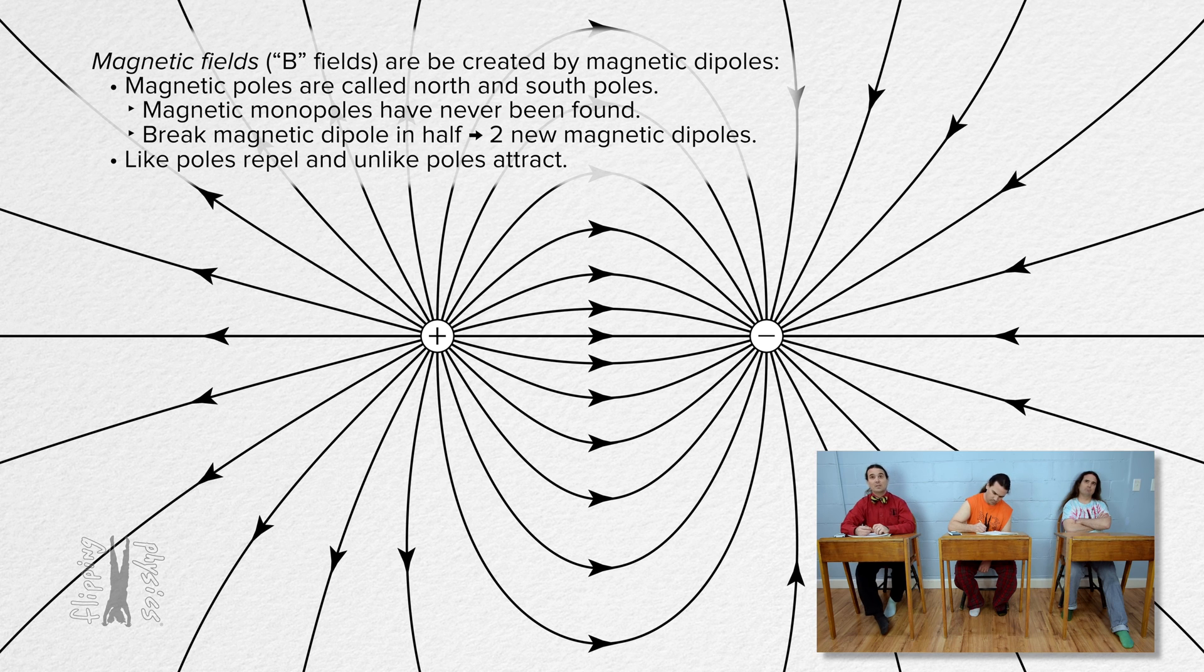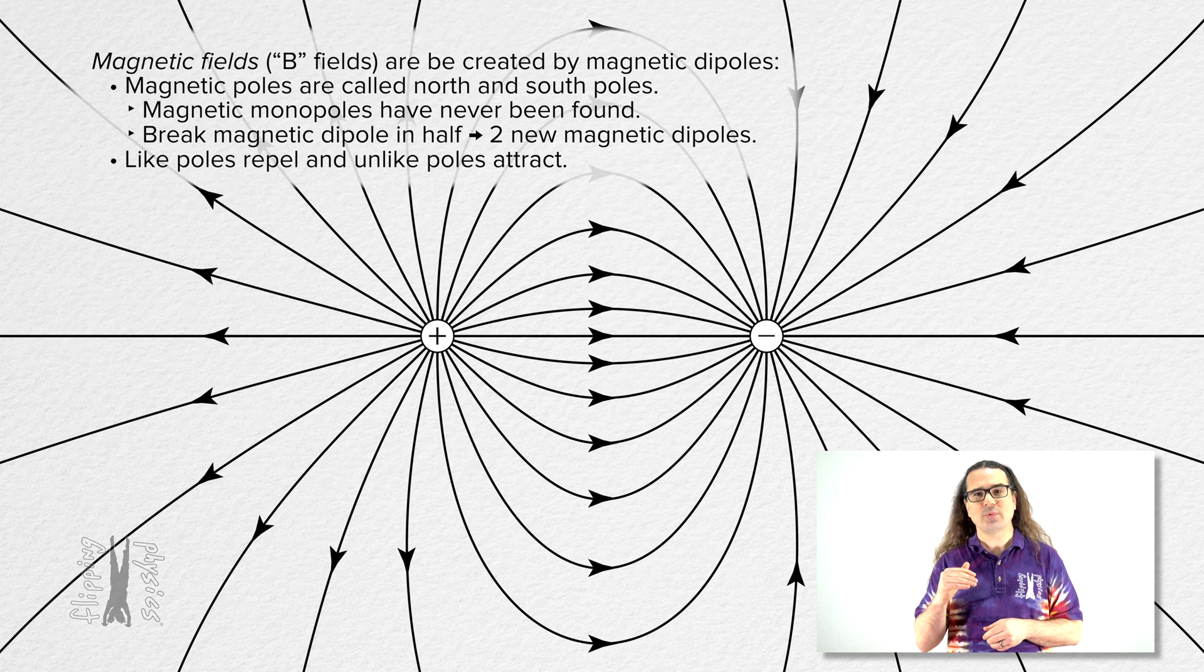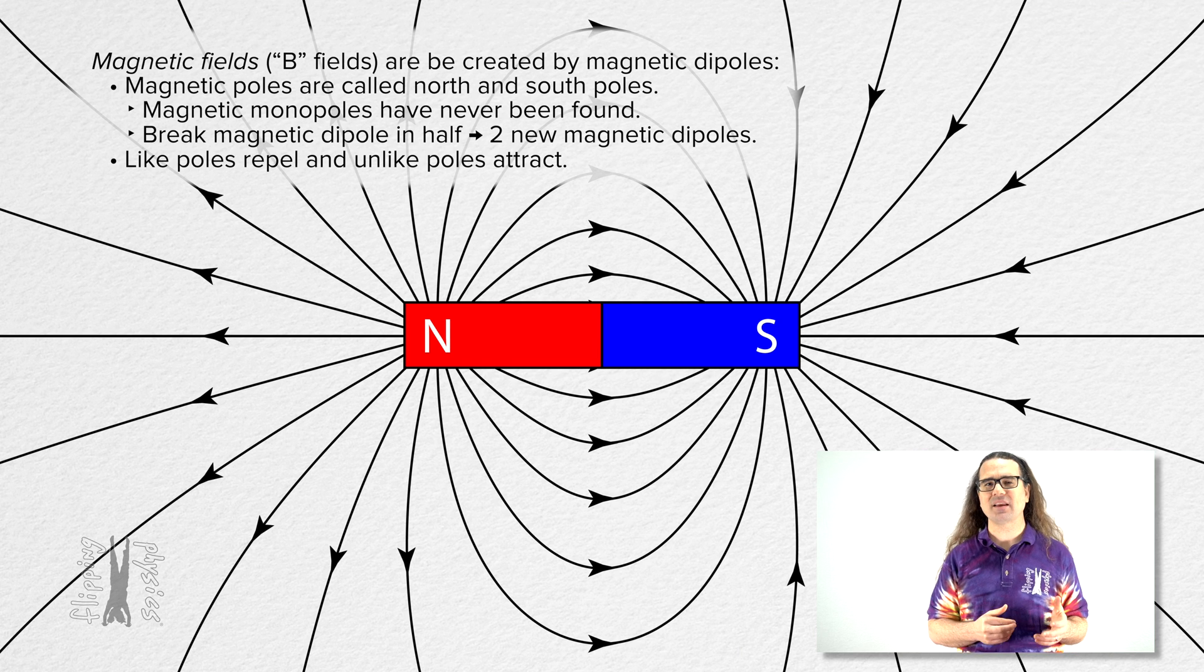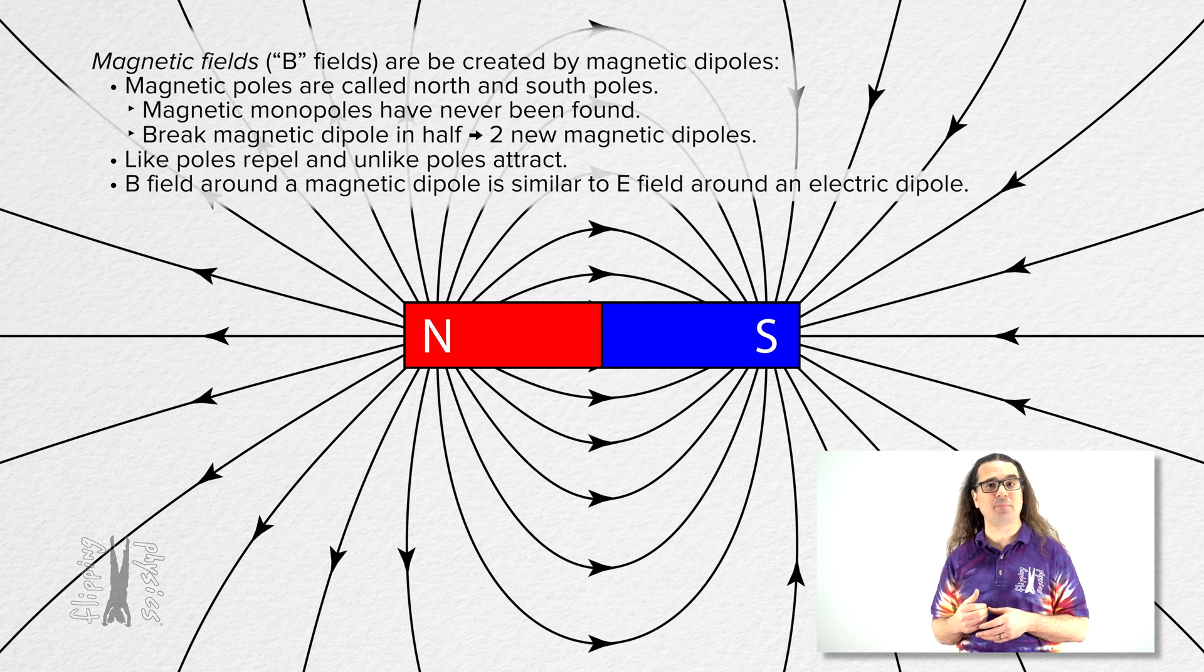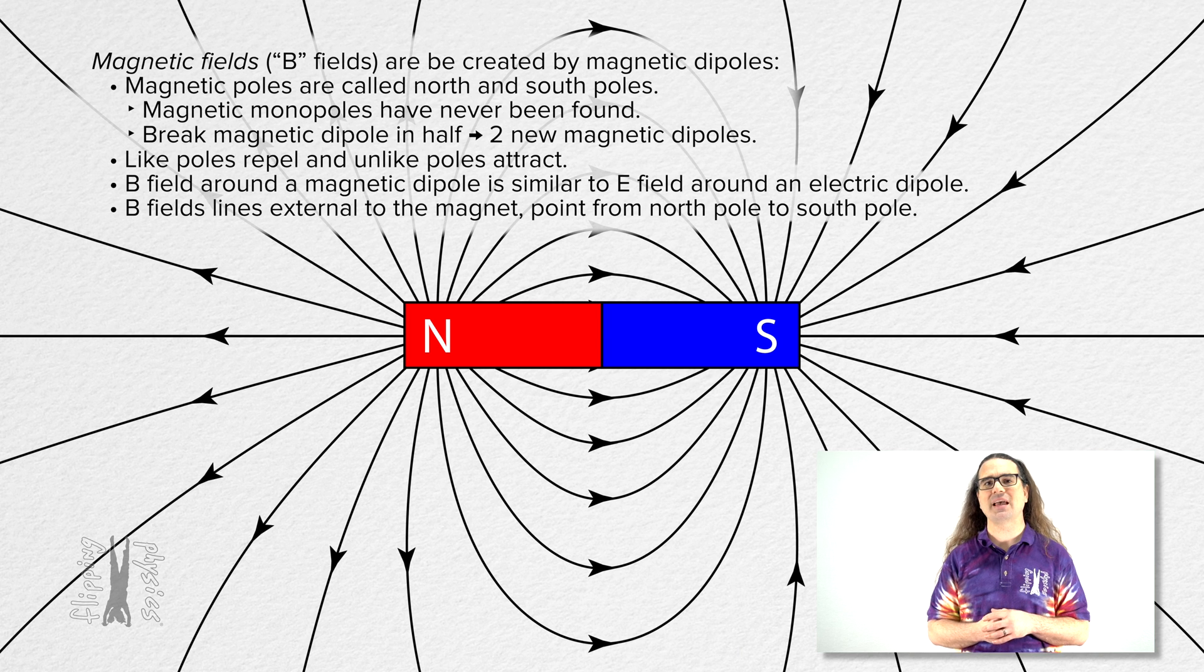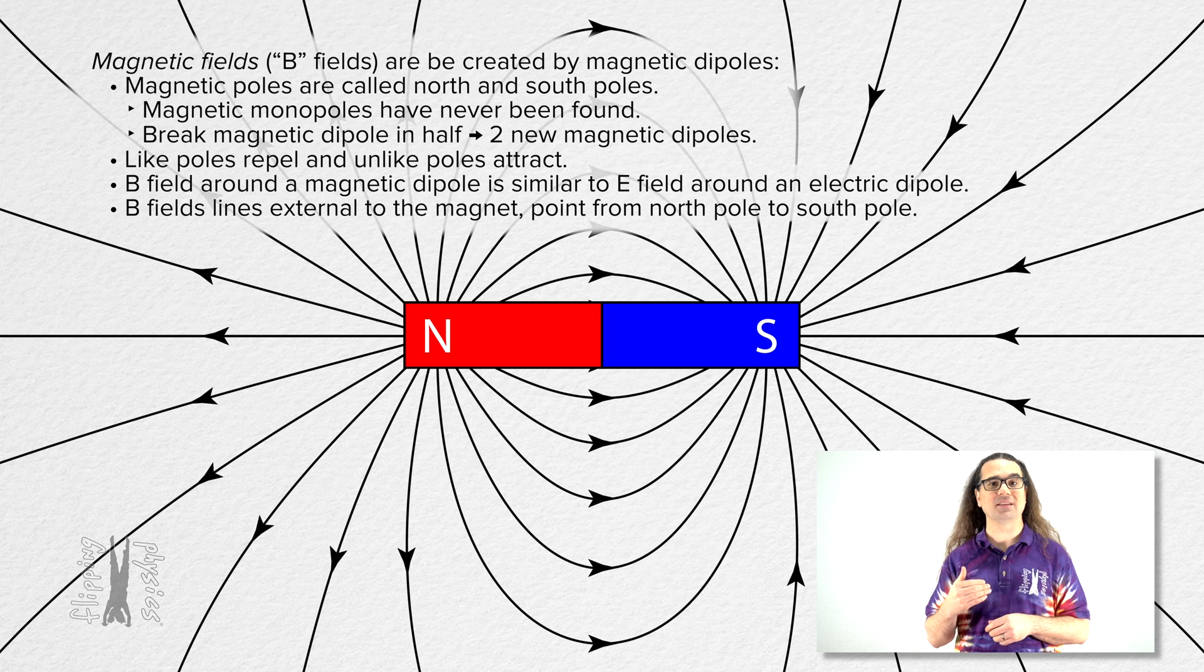And this is the electric field caused by an electric dipole. Notice the electric fields start at the positive charge and end at the negative charge. When we replace that electric dipole with a magnetic dipole, you can see the magnetic field caused by a magnetic dipole external to the magnet has the same characteristics as the electric field caused by an electric dipole.